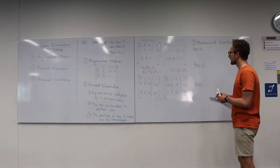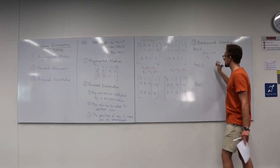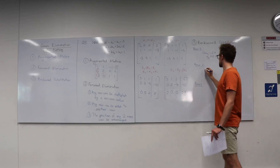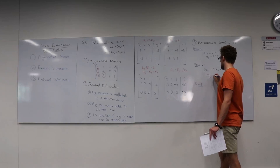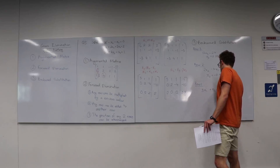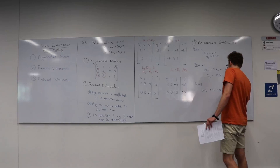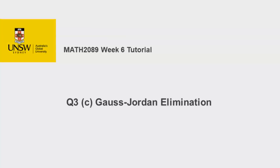Backward substitution is the same as before. We have 12x₃ equals 27, so x₃ equals 2.25. We have 2x₂ minus 4x₃ equals negative 10, so x₂ equals negative 0.5. And our first row gives us 3x₁ plus x₂ plus x₃ equals 1, so x₁ equals negative 0.25. So we have x₃ equals 2.25, x₂ equals negative 0.5, and x₁ equals negative 0.25.